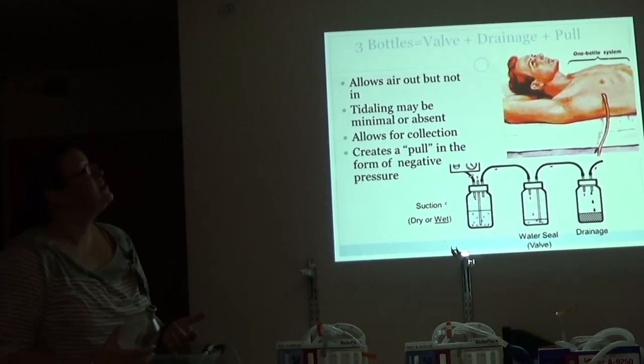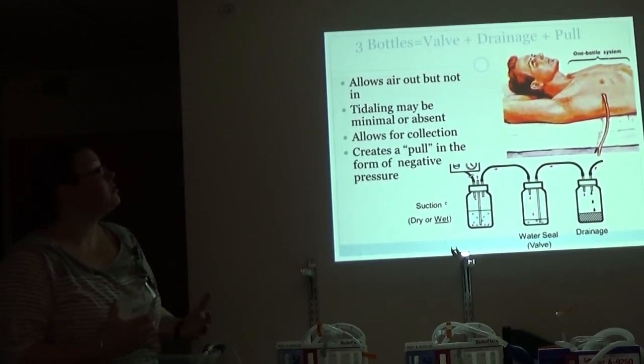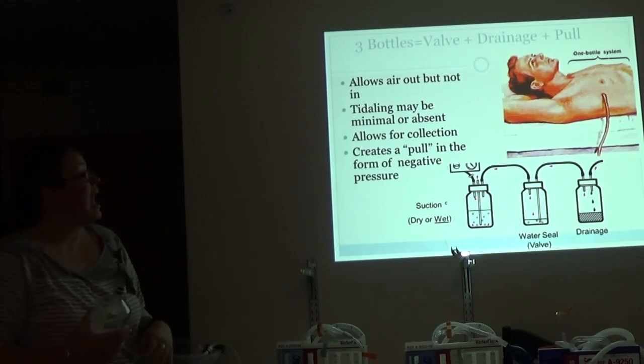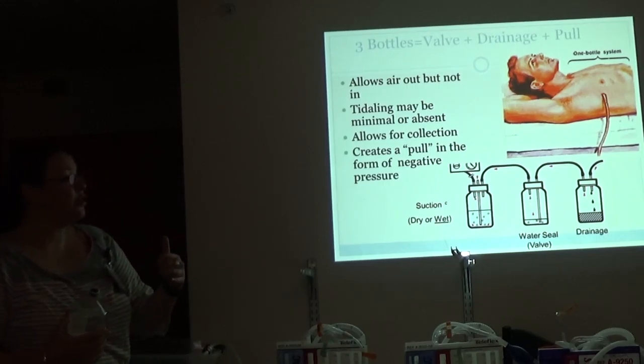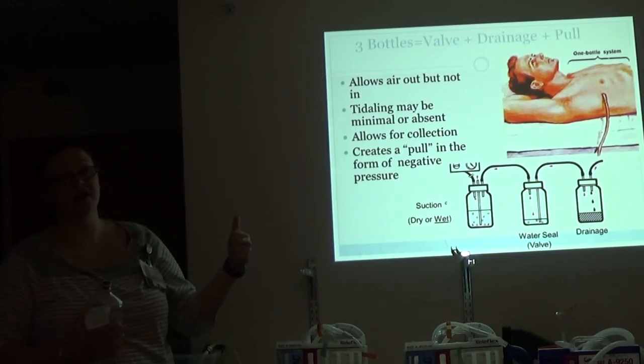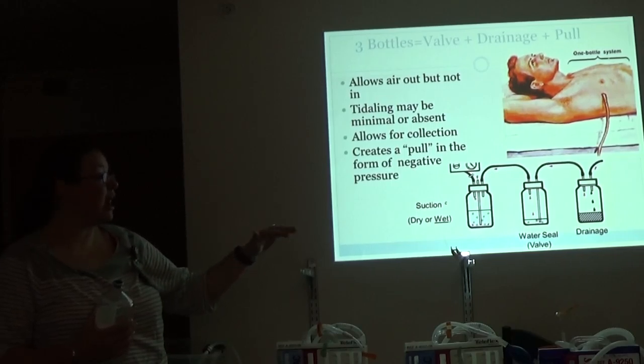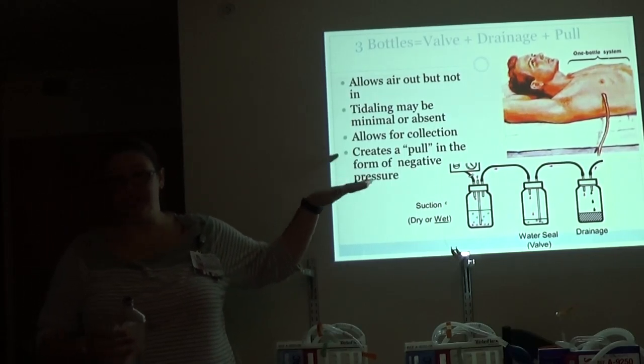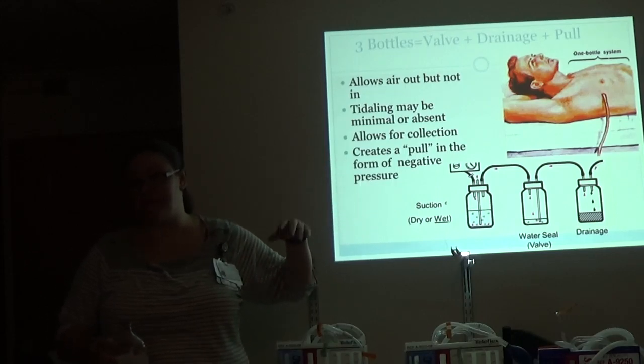Three bottles is your valve, your drainage, and your pull. So it allows your air out. Titling can be minimal or absent so that rise and fall. And it allows for collection, but also you can suck on that. So the drainage gets collected in your first chamber. The air goes over to the water seal. It continues to be sucked out. And the depth of the water in your third chamber is what determines the amount of suction getting to your patient.